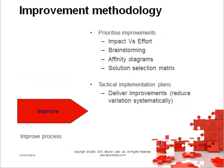The stage following on from that is Improve. Here, we're looking to improve the process — there's no point in measuring and analyzing it if we don't go on to improve it. We'll prioritize those improvements using impact versus effort, brainstorming, affinity diagrams, solution selection matrix, and others. We pull together tactical implementation plans and then deliver the improvements, reducing that variation systematically.